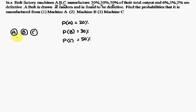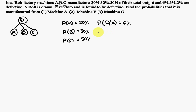6 percent from A, 3 percent from B, and 2 percent from C are defective. We now have a new term called defective — the common event for all three machines. Let D be the event of getting a defective bolt. So this 6 percent is written as: probability of D given A occurs is 6 percent, probability of D given B occurs is 3 percent.